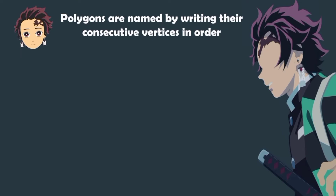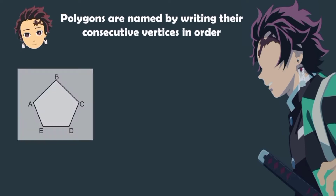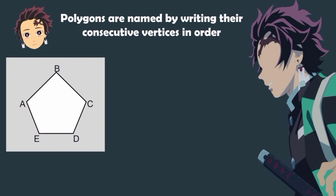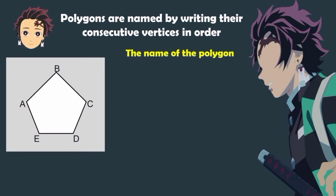Polygons are named by writing their consecutive vertices in order. Now, look at this illustration. Let's identify the different names of the polygon.